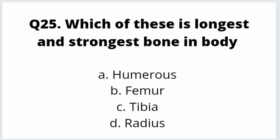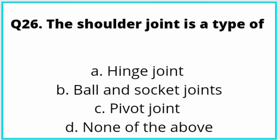Question number 26: The shoulder joint is a type of which joint? The correct answer is option B: ball and socket joint. So the shoulder joint is a type of ball and socket joint.